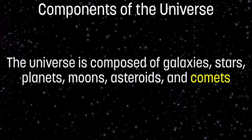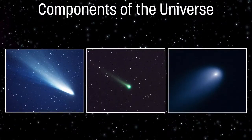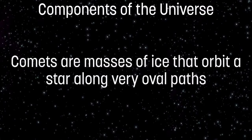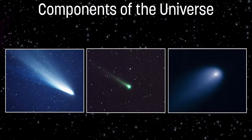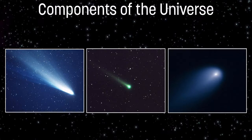Our next component are comets. Comets are masses of ice that orbit a star along very oval, very elliptical paths. A comet is often compared to a dirty snowball. Comets are mainly composed of solids that easily change to gases when heated. They are largely ices of substances such as water and methane, mixed with rocky or metallic solids. Most comets are 1 to 100 kilometers in diameter — not very big. When comets get near the sun, some of their ices turn to gas through a process called sublimation.